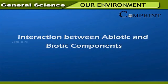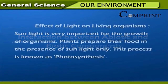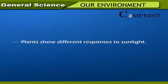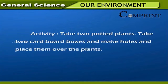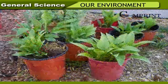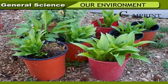Interaction between abiotic and biotic components. Effect of light on living organisms: Sunlight is very important for the growth of organisms. Plants prepare their food in the presence of sunlight only — this process is known as photosynthesis. Activity: Take two potted plants, place cardboard boxes with holes over them, and observe daily. After a week it is noticed that plants bend towards the sunlight.